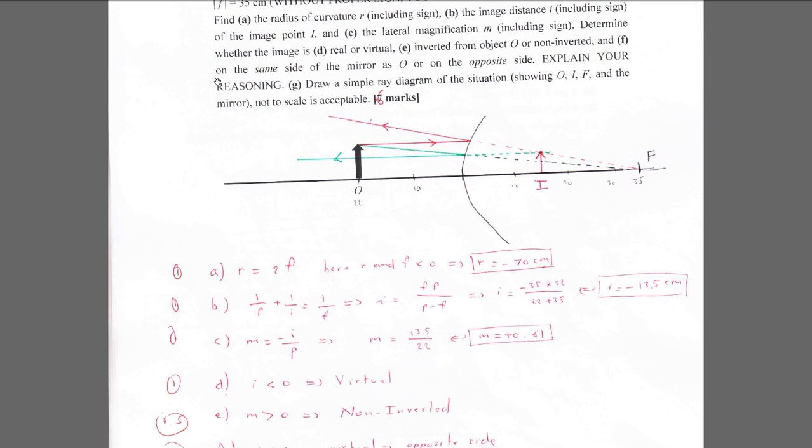For part F, the image is on the opposite side of the mirror from the object, because it is virtual. In general, real images are on the same side as the object, and virtual images are on the opposite side.